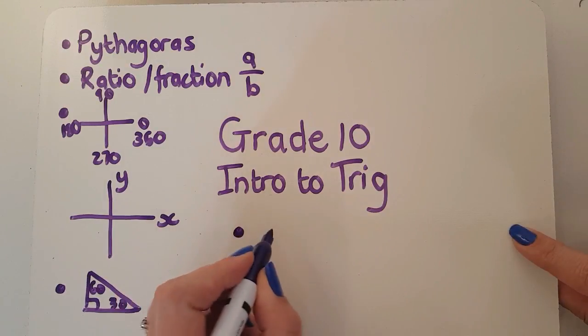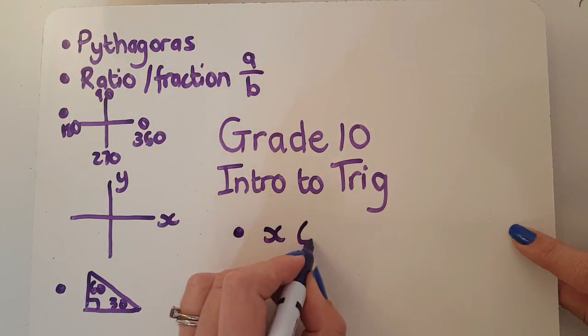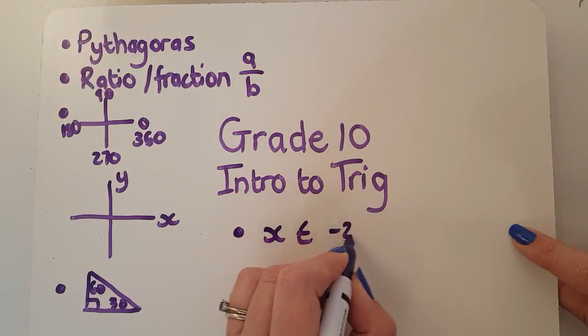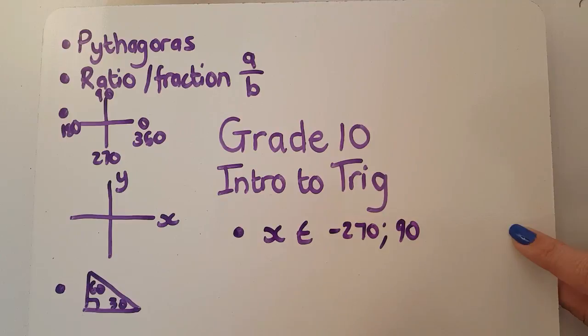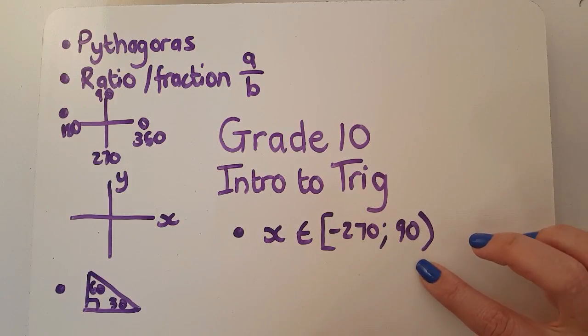You may remember this we might say that x is an element that goes from negative 270 to 90, and then I for example include the 270 and exclude the 90. Now if this is troubling for you again you're going to need to get through that. It is really important that you understand what's going on.